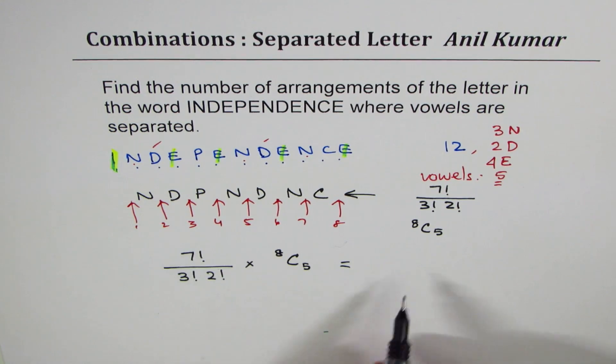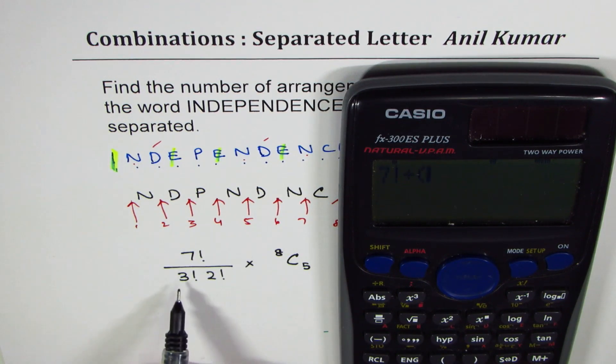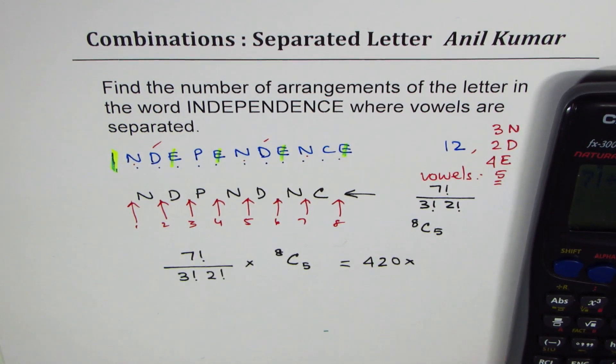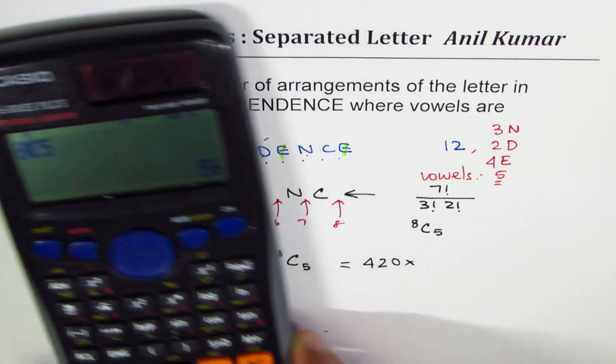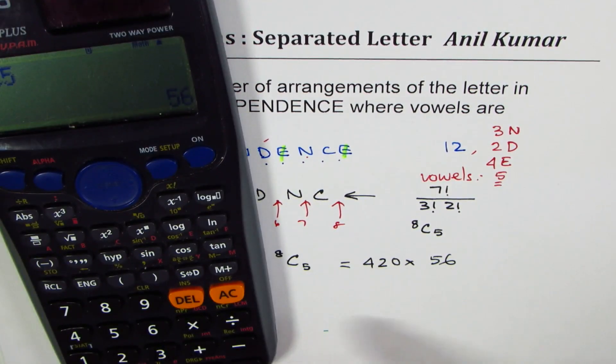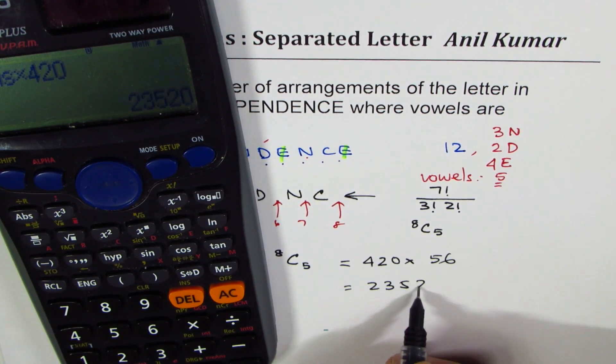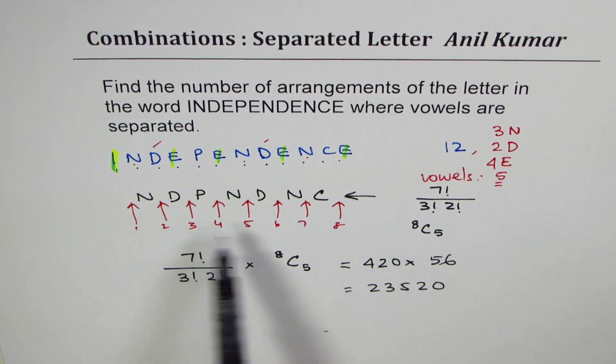So, I hope you have understood the approach. You can always calculate this answer and write it down. So, let's try it. I may do calculation mistakes. I am not really good at it. 7 factorial divided by, 3 times 2 is 6, 6 times 2 is 12. 420. 420 times 8 C 5. 8 C 5 equals to 56. So, what we get here is 56 times 420. And that is 23,520. So, there are 23,520 ways in which we can actually have all the vowels separated.